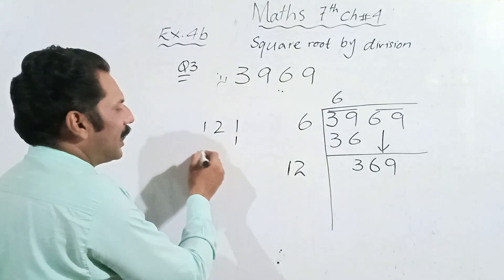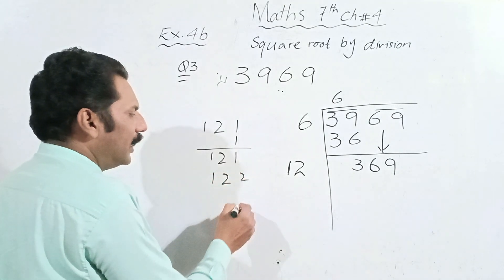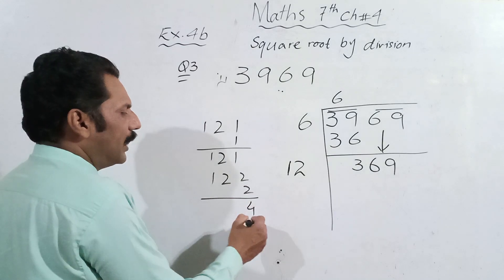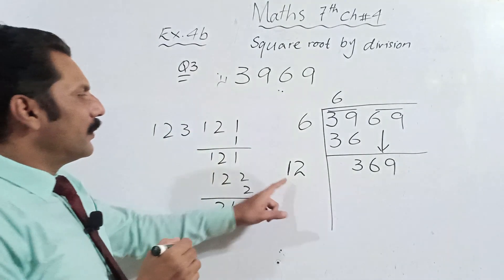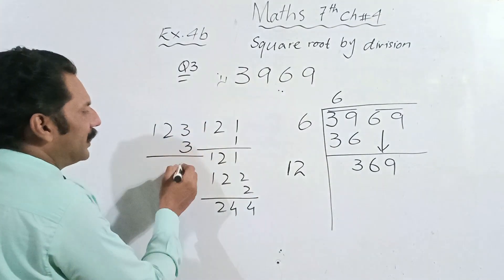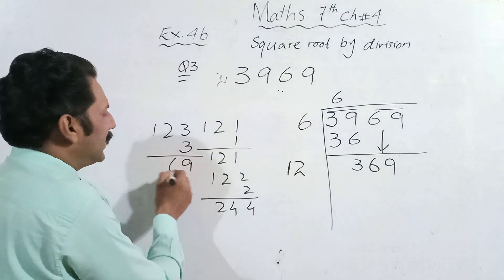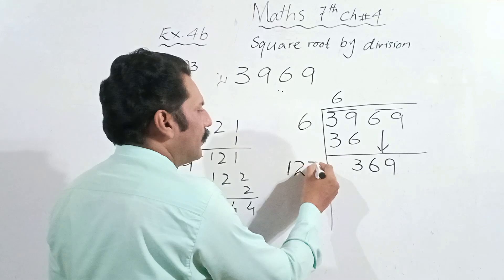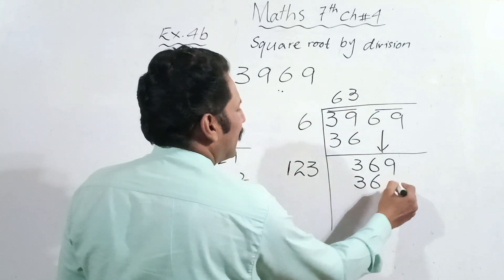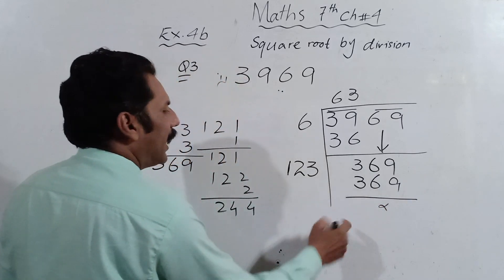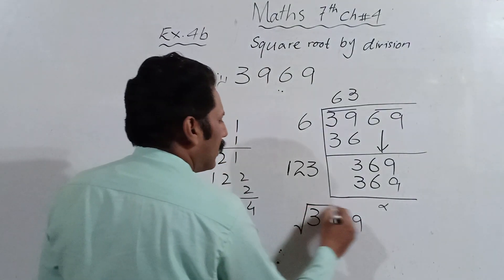If we increase by 1, it becomes 121 and we multiply 121 by 1 to get 121. If we increase by 2, we multiply 122 by 2 to get 244. If we increase by 3, we multiply 123 by 3: 3 threes are 9, 3 twos are 6, 3 ones are 3 — that gives 369. So we write 3 in the quotient and multiply 123 by 3 to get 369; the remainder is 0. The square root of 3969 is 63.